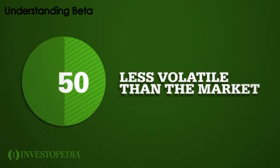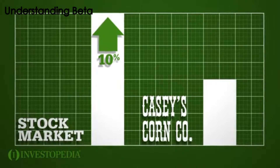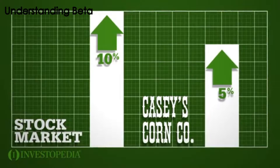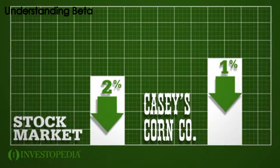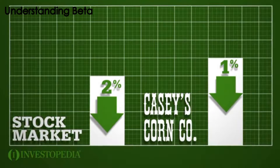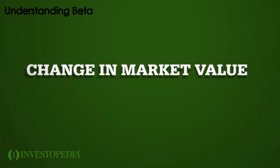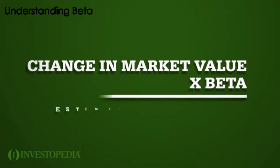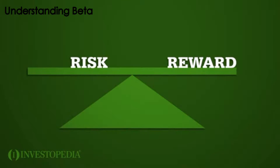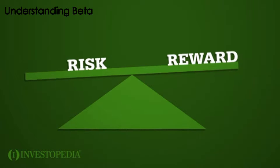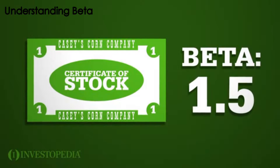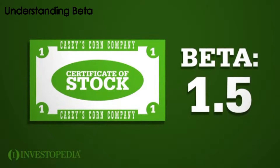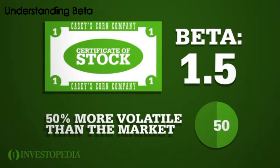The beta of Casey's Corn Company is 0.5, meaning it has historically been fifty percent less volatile than the market. If the market moves up by ten percent, Casey's stock will only appreciate five percent. If the market declines by two percent, Casey's will lose only one percent. The change in market value is multiplied by a stock's beta to estimate its movement. High beta stocks have greater risk and therefore a higher expected return. If Casey's has a beta of 1.5, it will theoretically be fifty percent more volatile than the market.